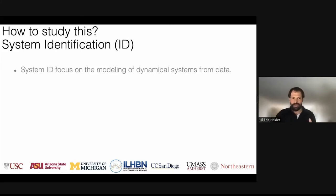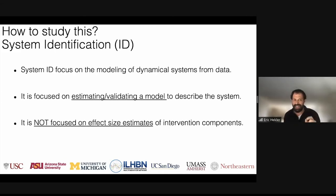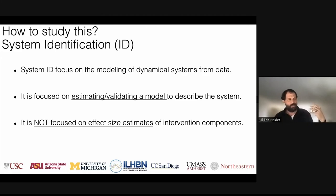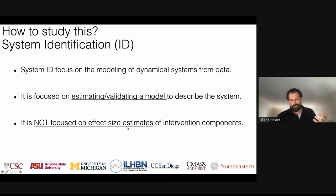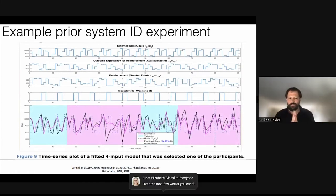System identification focuses on modeling of dynamical systems from data. It's focused on estimating and validating a model to describe the system — it is not focused on effect size estimates of intervention components. All of the work we classically do around experimentation is built around statistical notions of a cause and effect — an intervention produces an outcome — which gets us into thinking of humans as machines. What if we're trying to study causal explanatory models? System identification is a way to do that.